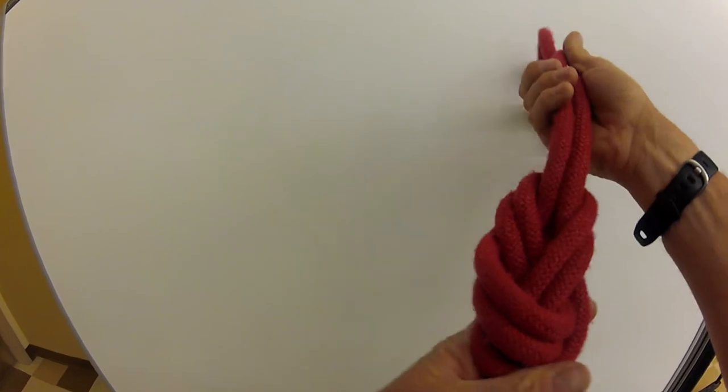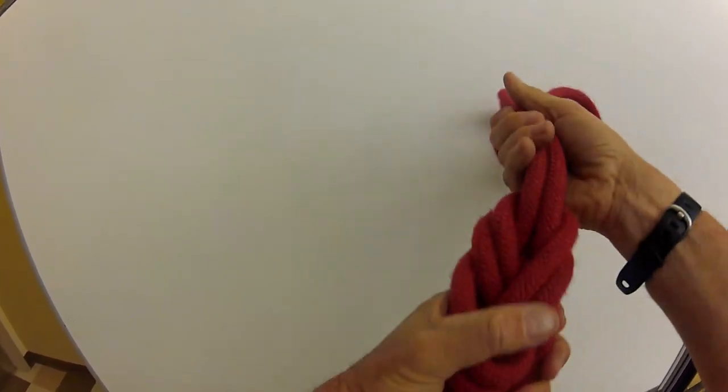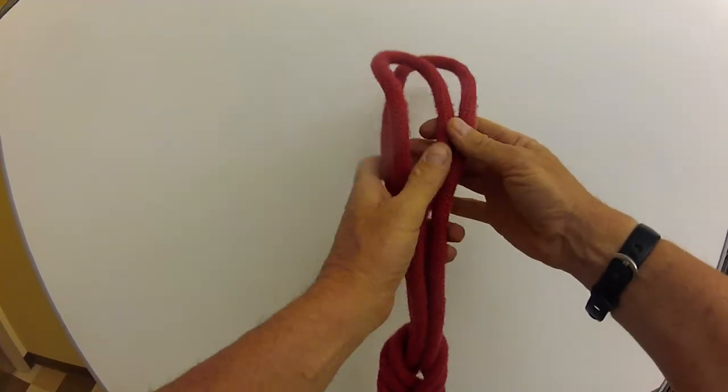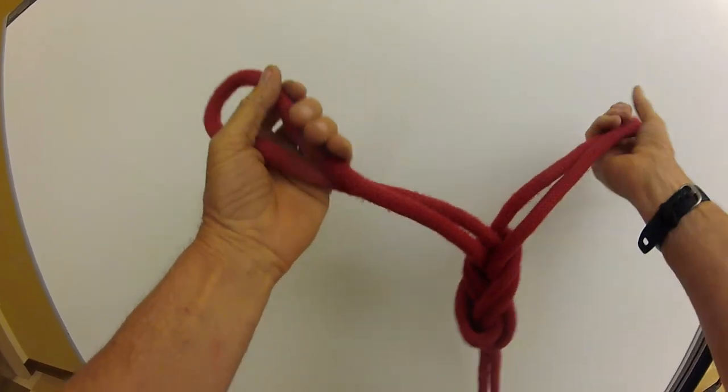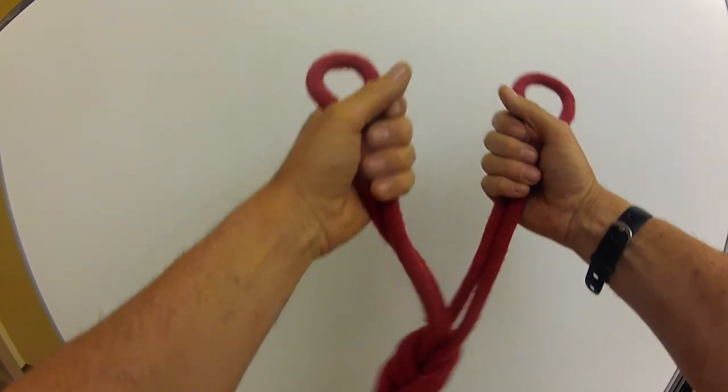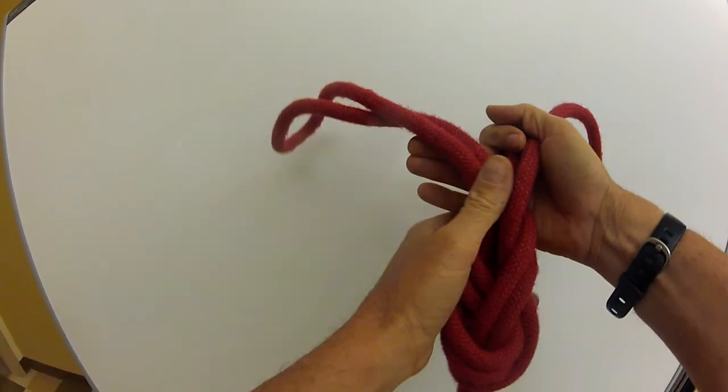You can do a little bit more dressing, but that's about as far as it goes. Now I've got two loops, and if I want to change the length of these two loops, all I have to do